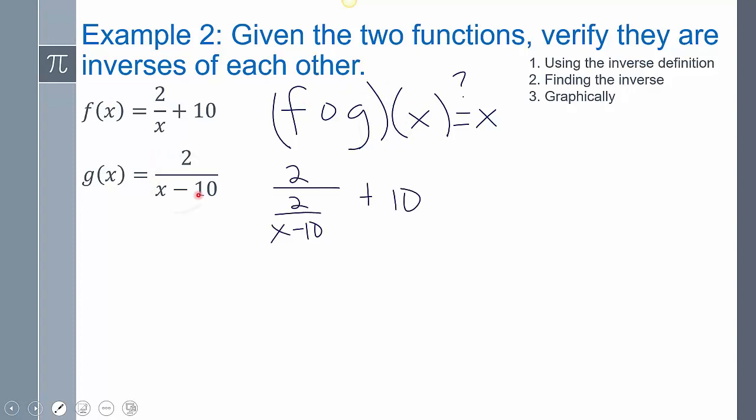Now this is kind of weird. I plugged my g function in for x. So I still have that 2 on top here. And then I still have that plus 10. All I did was replace the x, which this would have been x, with 2 over x minus 10.